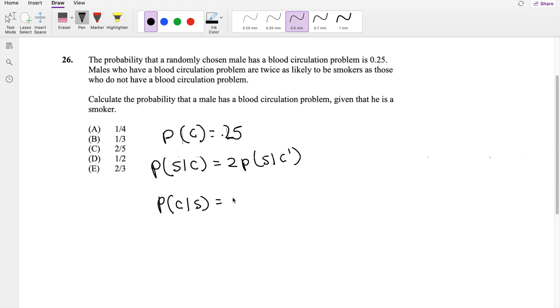So by Bayes' theorem, we can decompose this down to the probability that they are a smoker, given they have circulation problems, times the probability that they have circulation problems. Denominator, the probability that they have smokers. Well, that's just the law of total probability, right? It's the probability that they have circulation problems and they're a smoker, plus the probability that they are a smoker, given they don't have circulation problems.